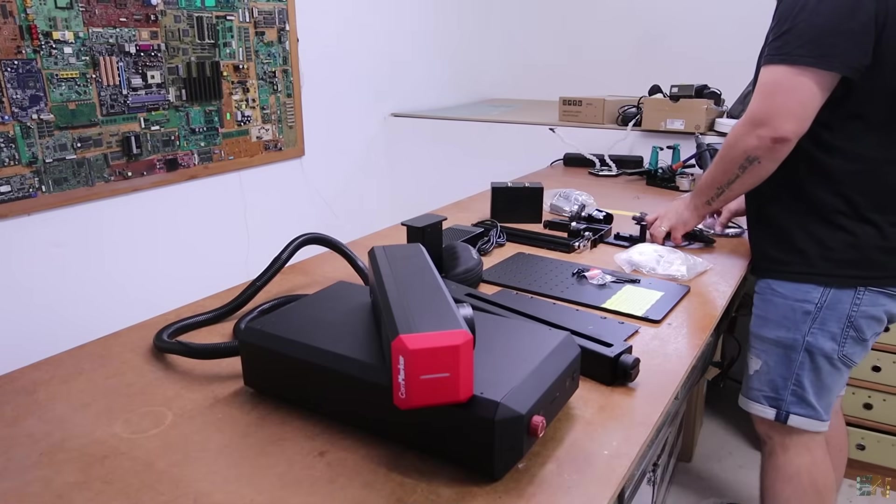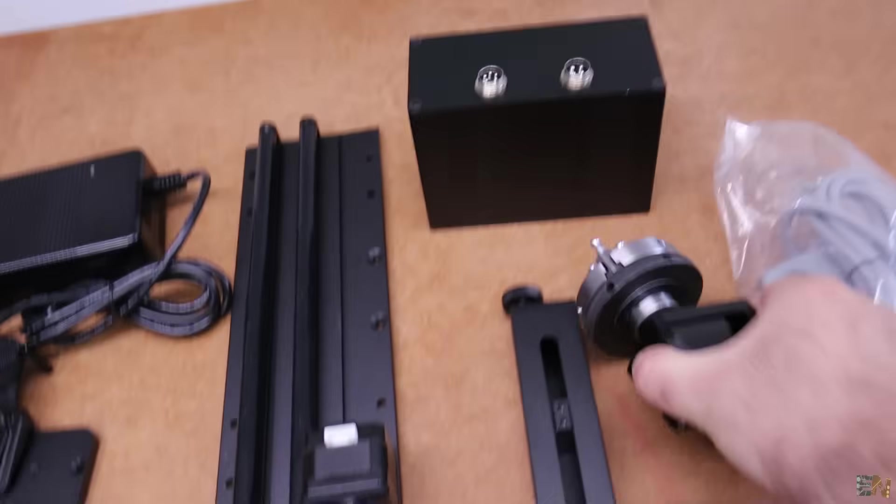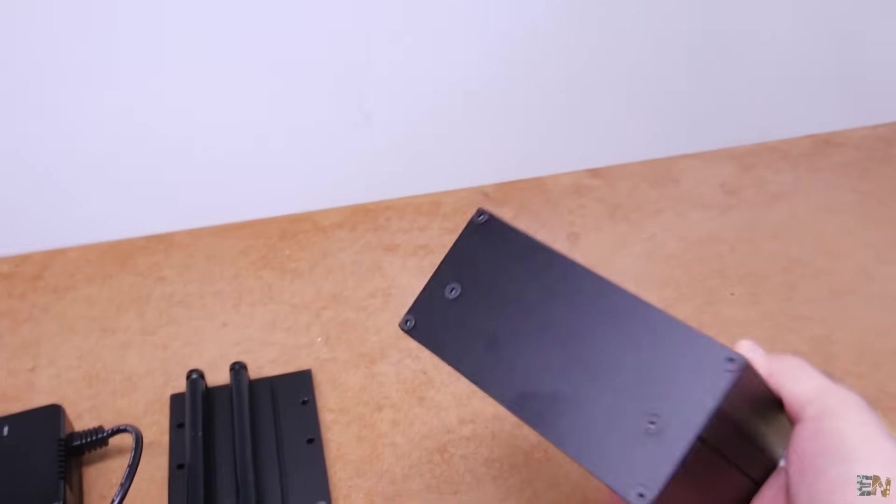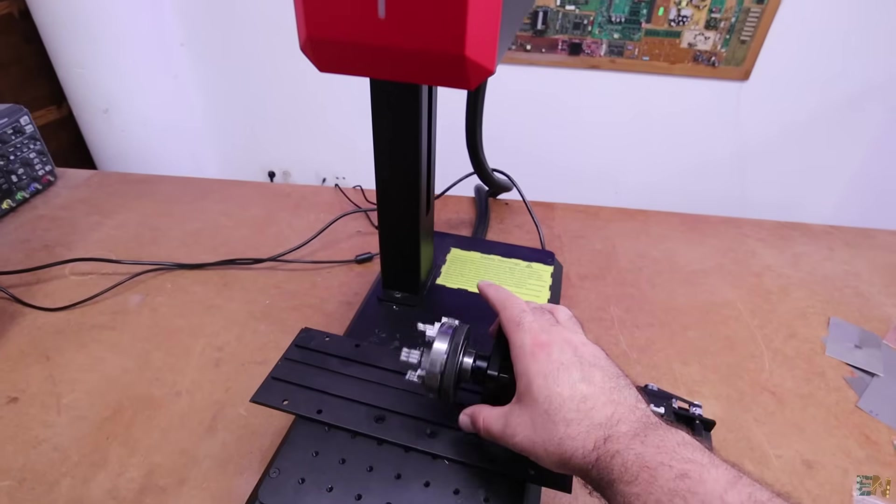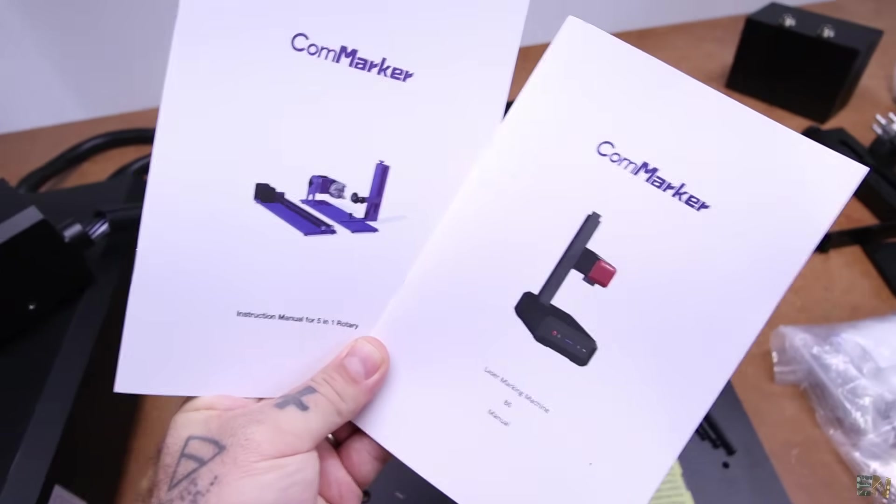And the rest are just accessories. We get a roller and a rotating chuck for engraving or cutting round objects. And we also get the extra controllers, the manual, the screws and tools, software, cables and some engraving material samples.